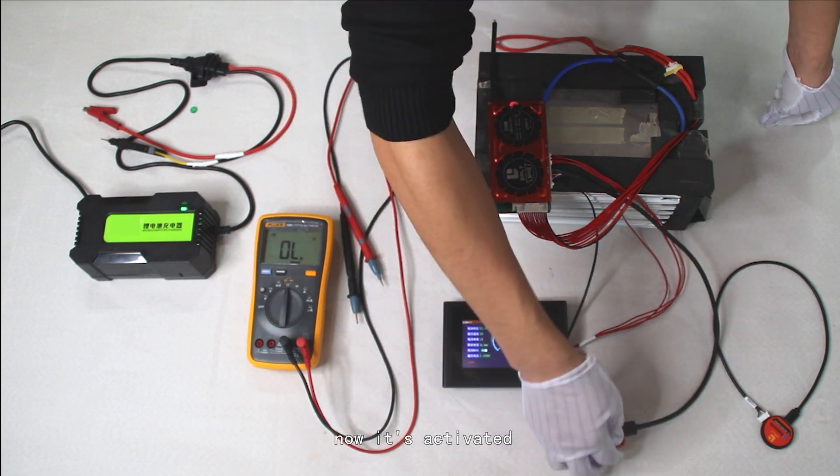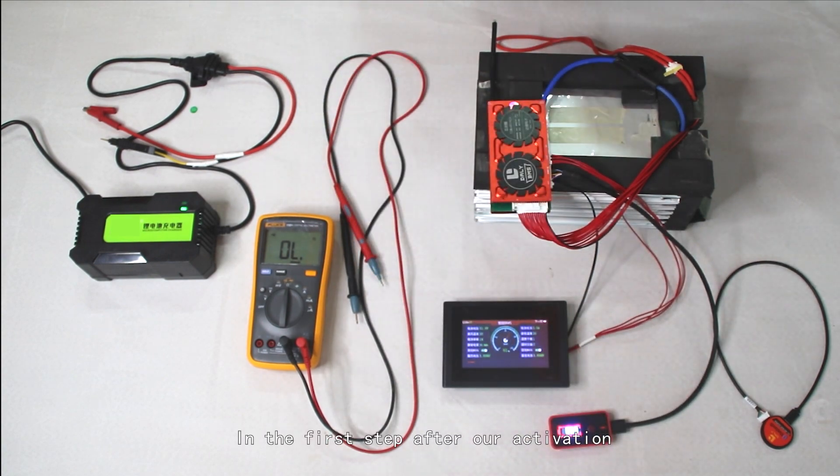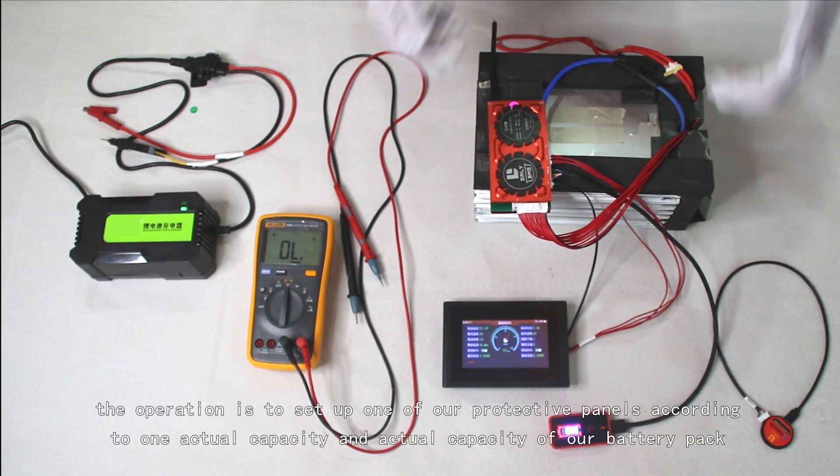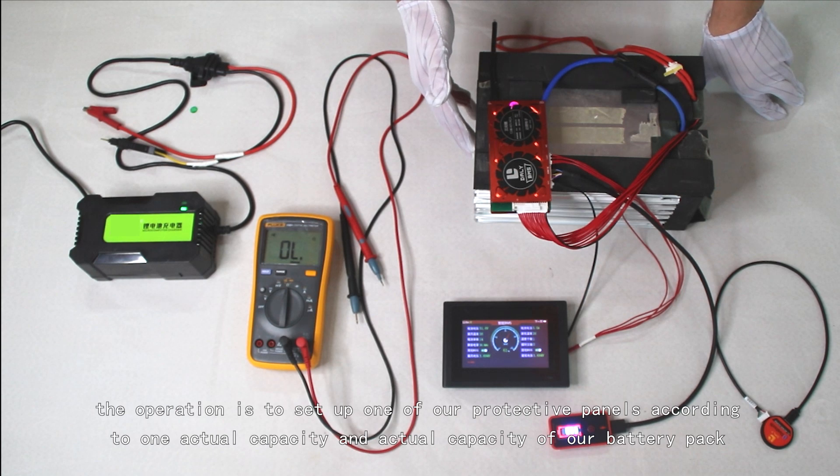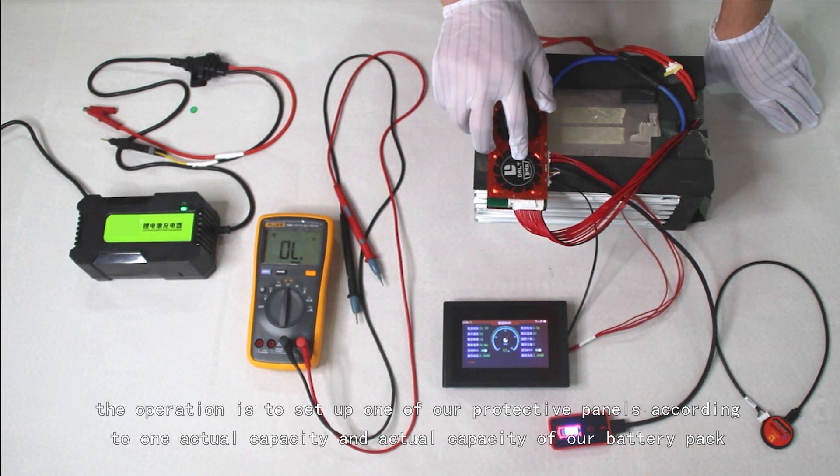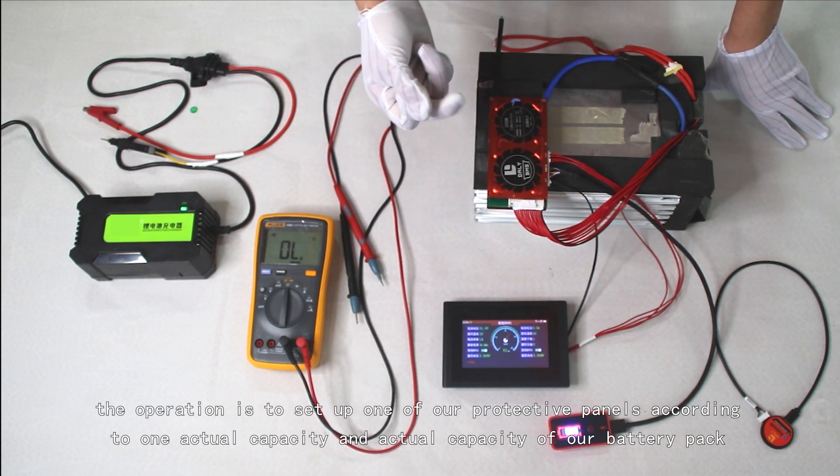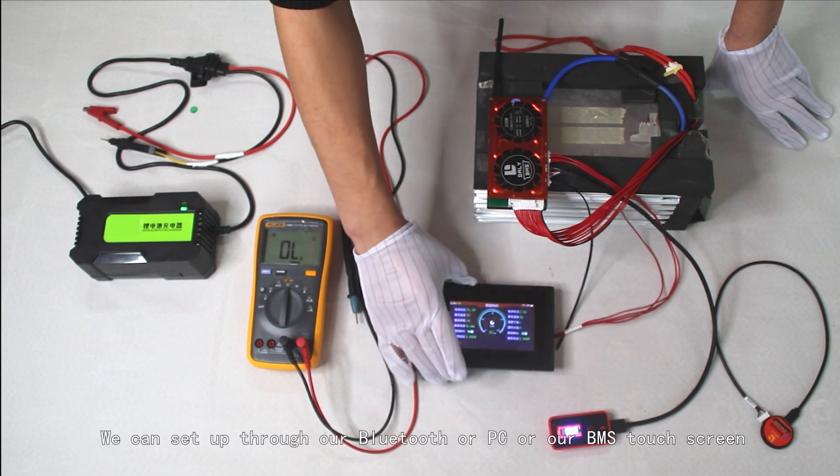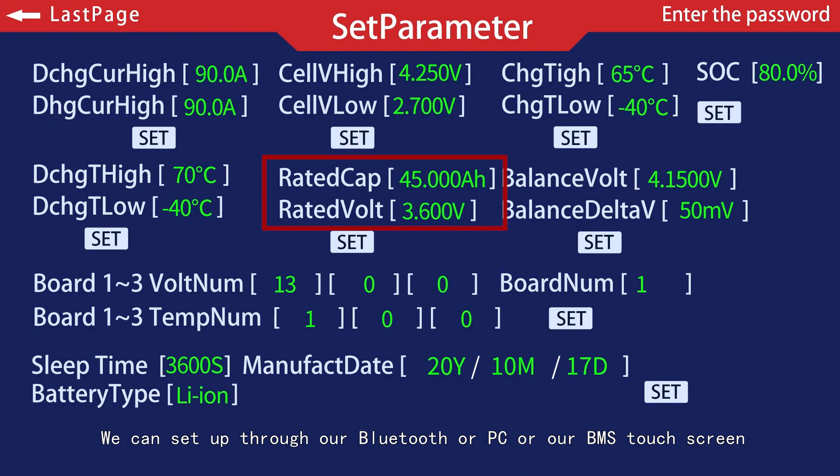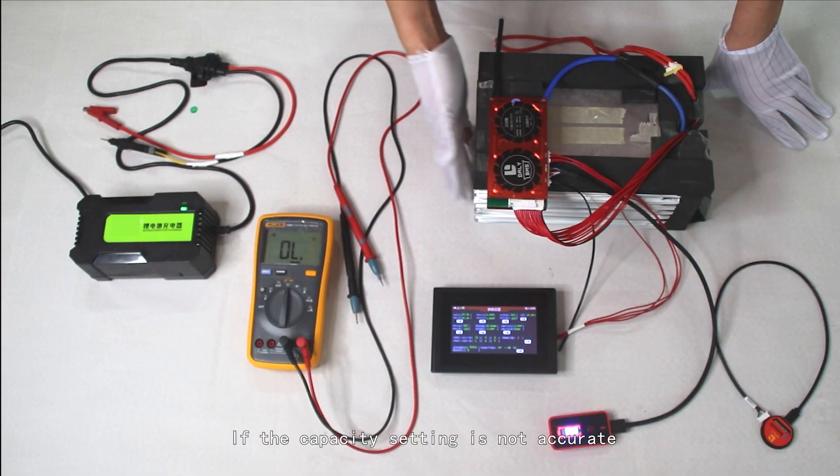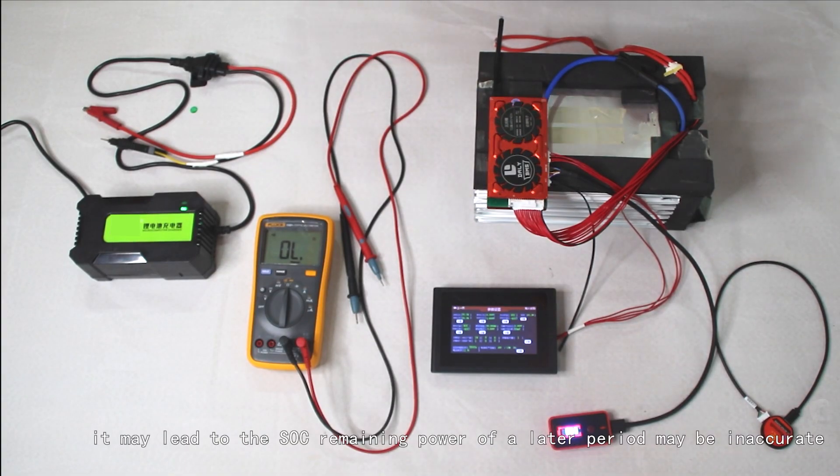After our activation, the operation is to set up the protective panel according to the actual capacity of our battery pack. We can set this up through our Bluetooth, PC, or our BMS touch screen. If the capacity setting is not accurate, it may lead to incorrect remaining power readings in a later period.